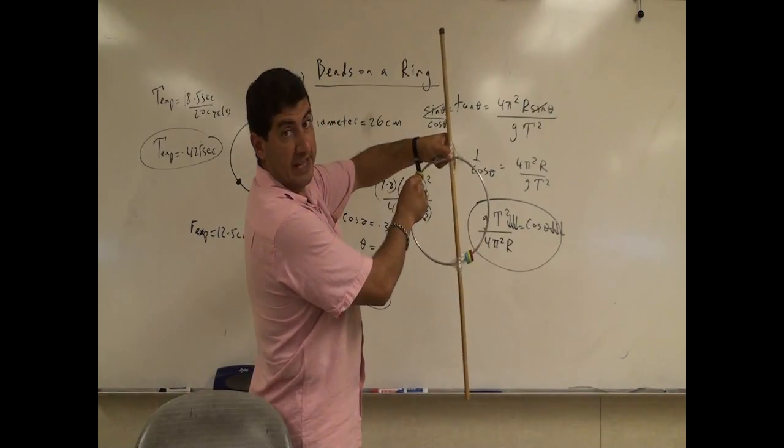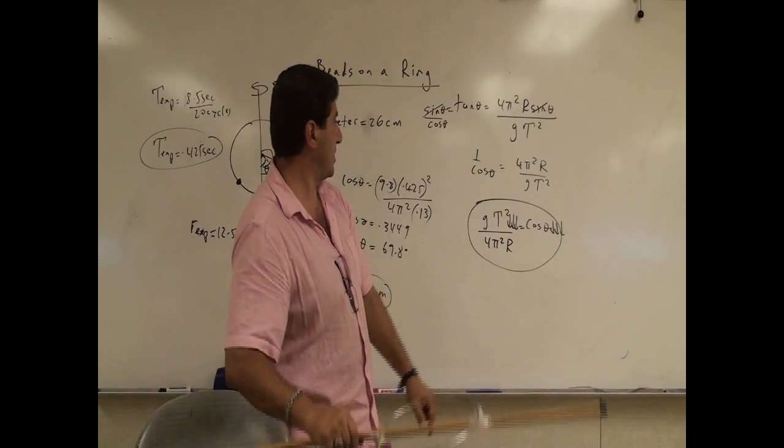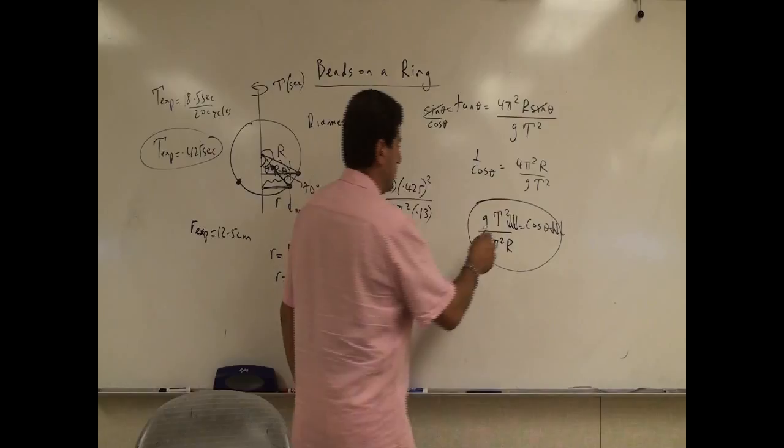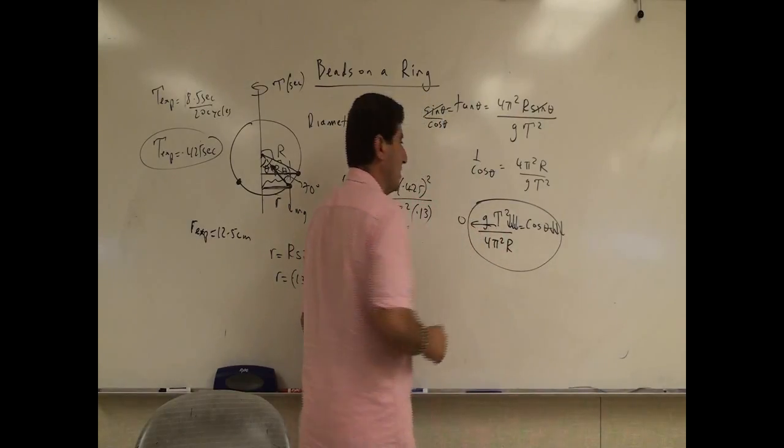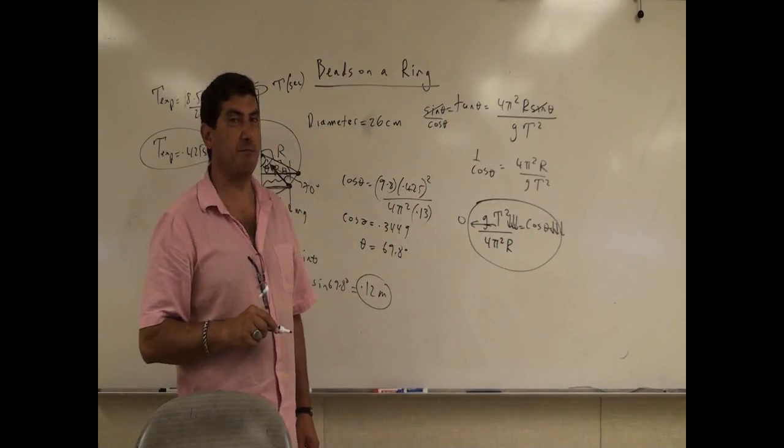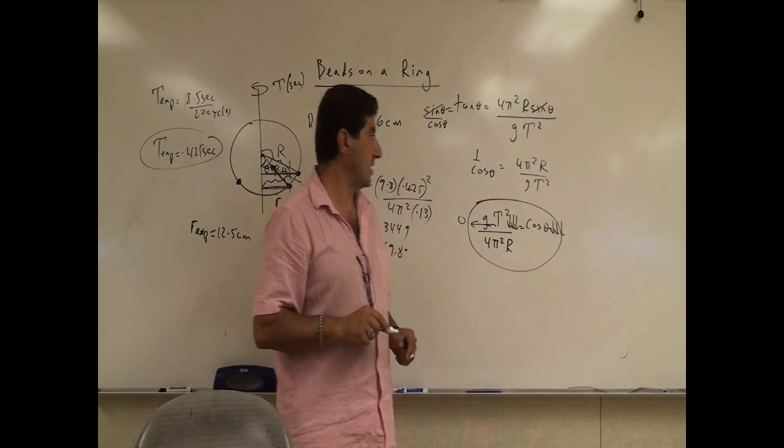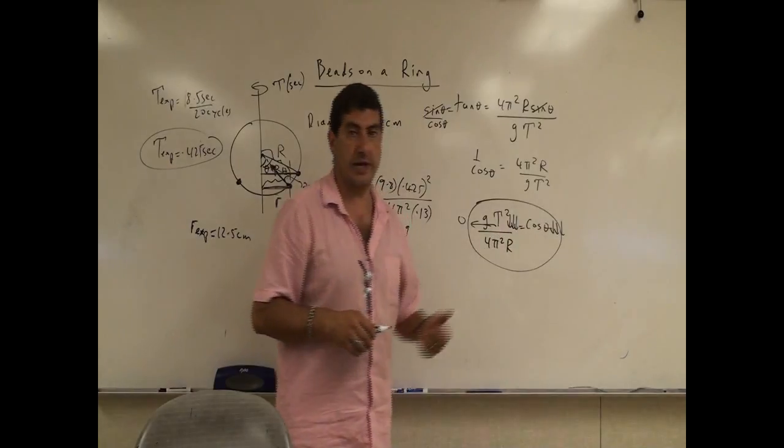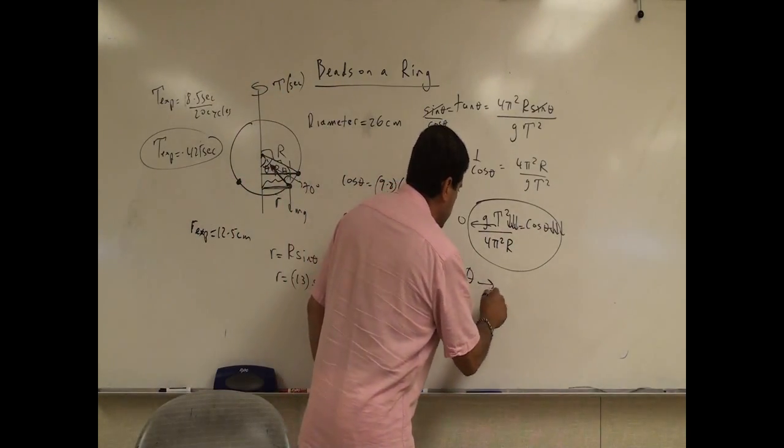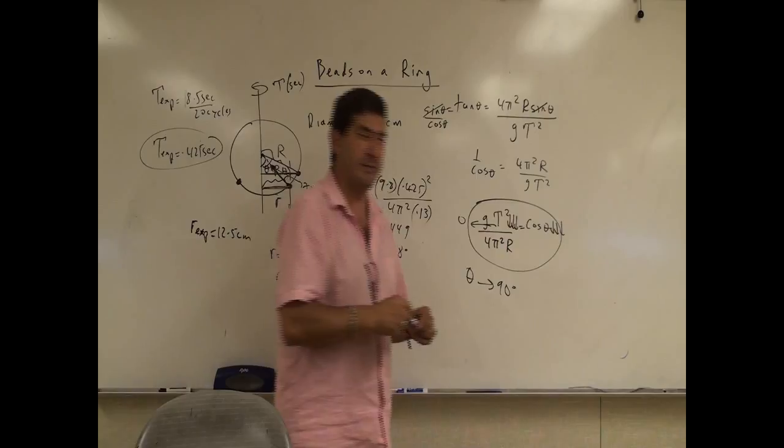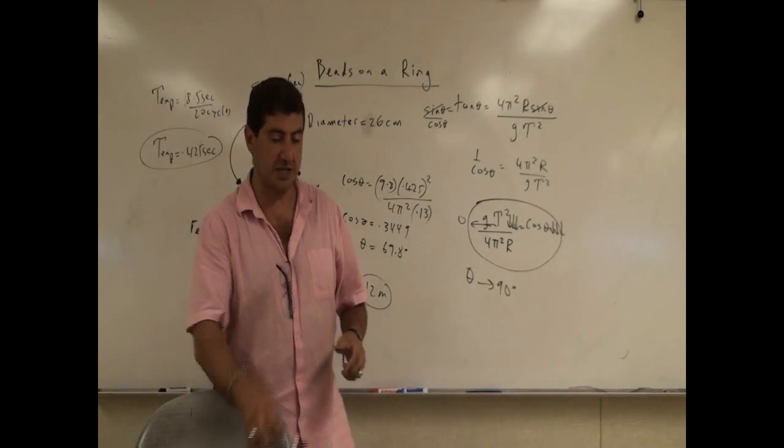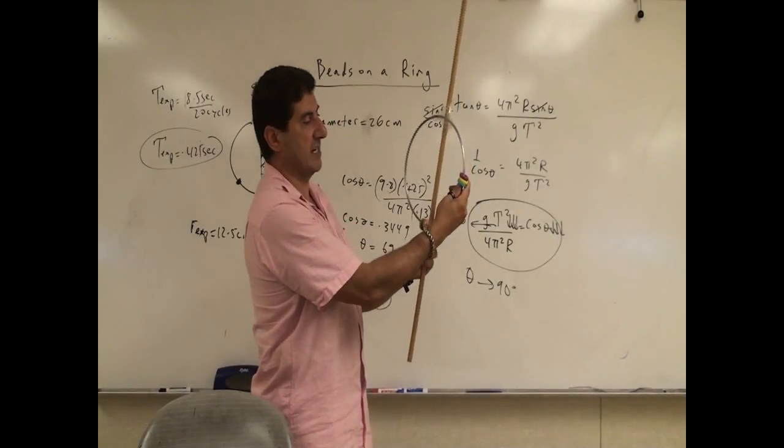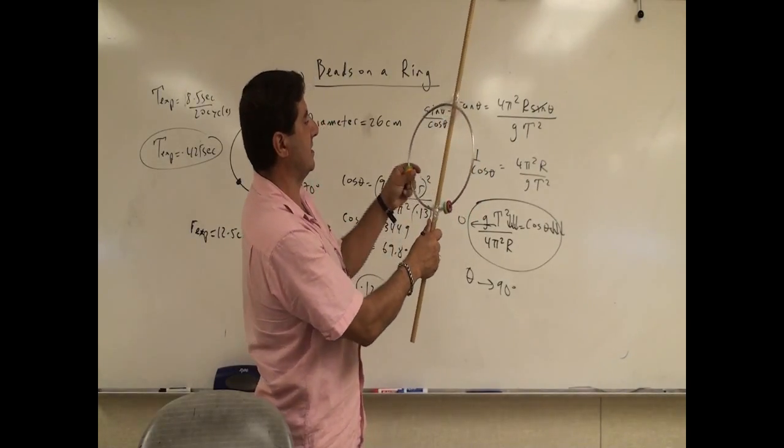Now, can the thing ever go more than 90? So let's say you're doing so fast that the t almost approaches 0. The t approaches 0. What's the greatest that the angle can be? So we can say here, the limit of this as cosine of theta is 0, what happens? Theta is 90. Theta begins to approach 90. So that means no matter how fast I do this, it can never actually go like this and then supersede 90. It can kind of approach 90 like this.